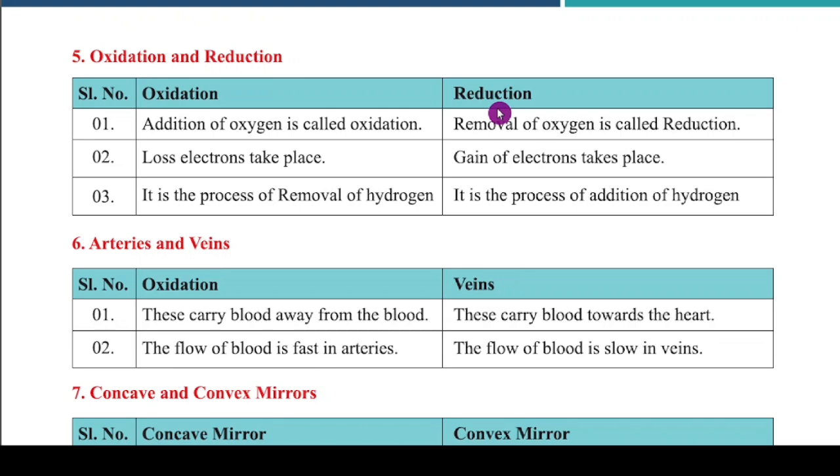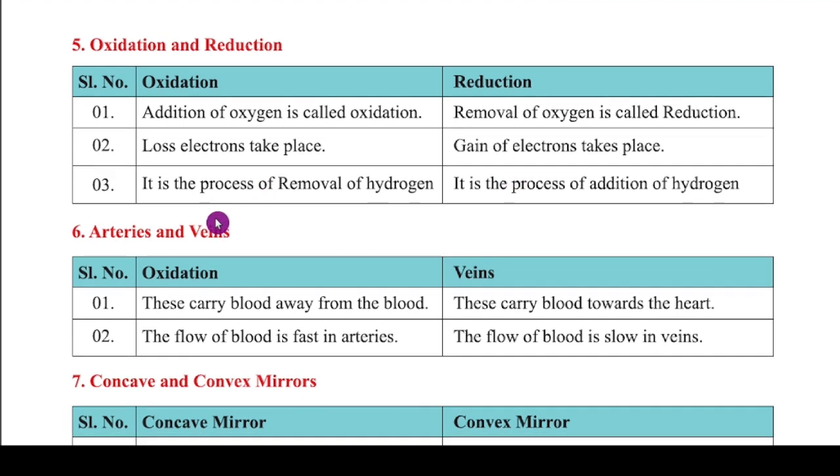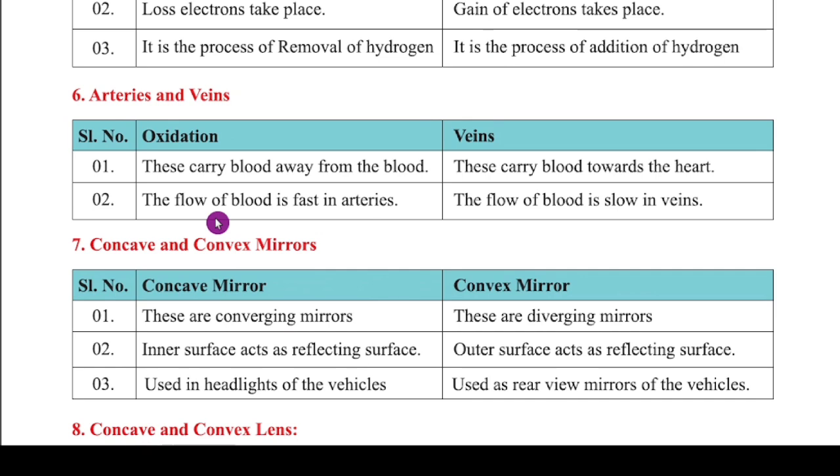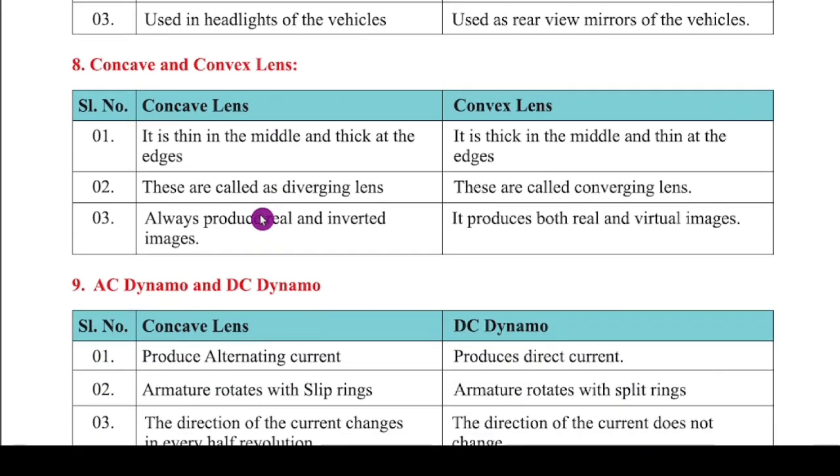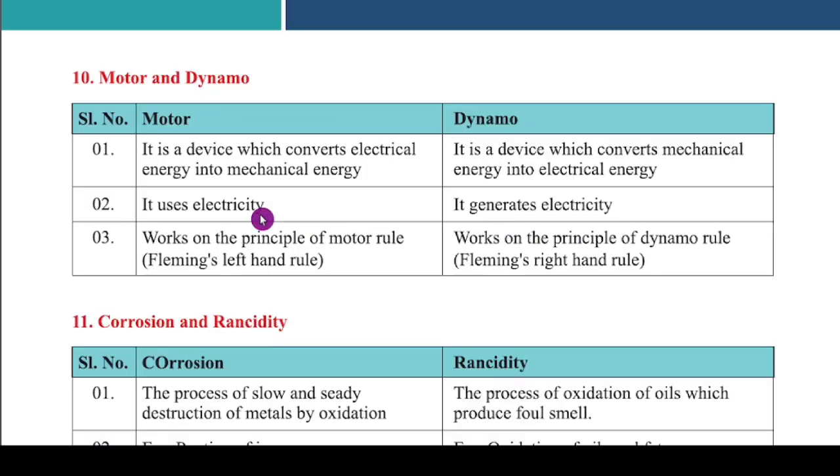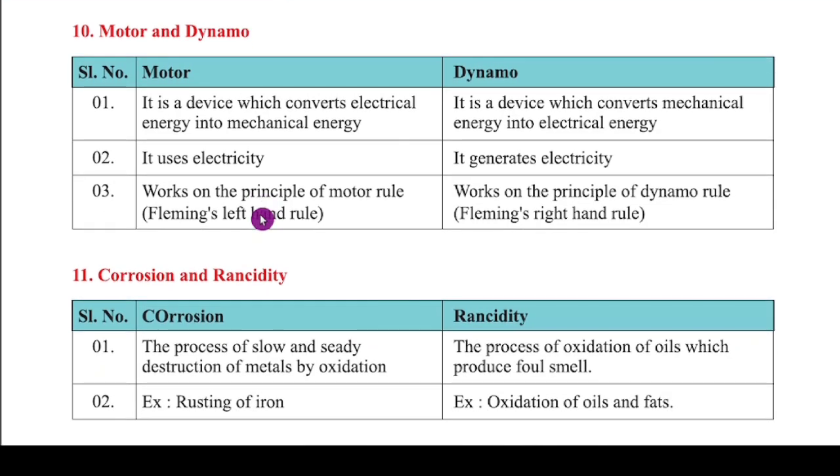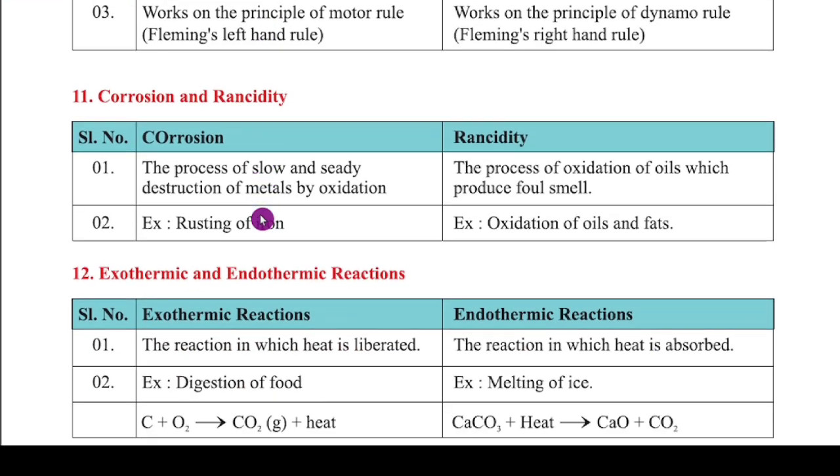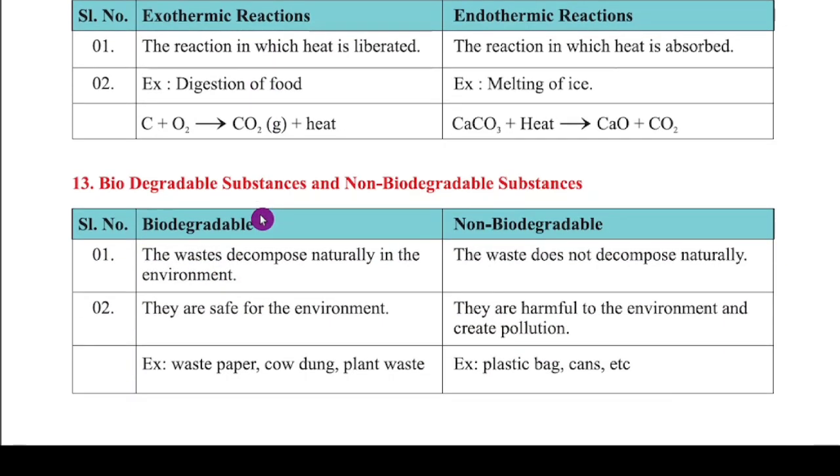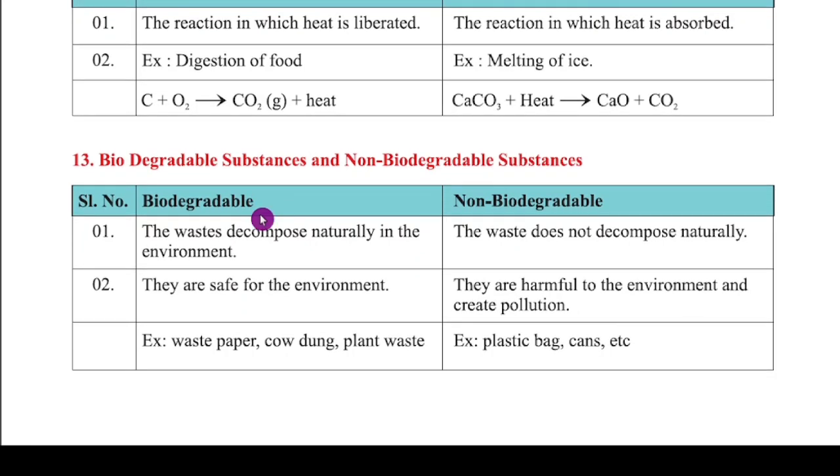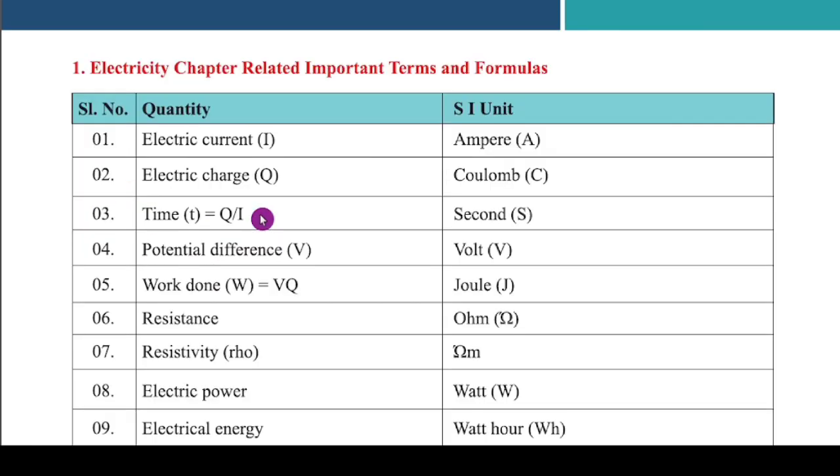And next is oxidation and reduction. So there also we have a differentiation. Oxidation means addition of oxygen. Reduction means removal of oxygen. Here, loss of electrons takes place. Here, gain of electrons takes place. And just you don't forget this. Next, arteries and veins. The differentiation between arteries and veins. Then concave mirror and convex mirror. Convex lens and concave lens. AC dynamo and DC dynamo. Differentiate between motor and dynamo. Corrosion and rancidity. Exothermic and endothermic reactions. Biodegradable substances and non-biodegradable substances. So these are differences.